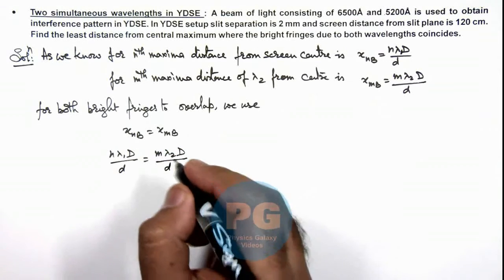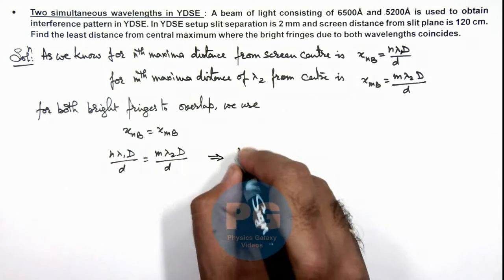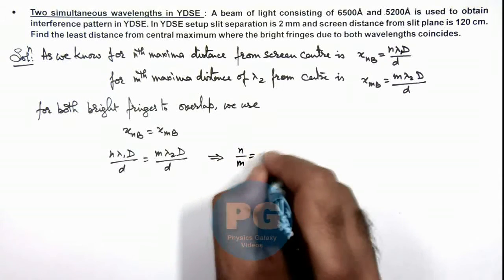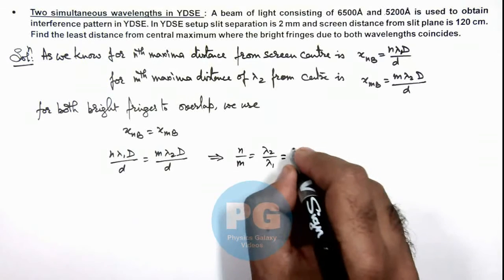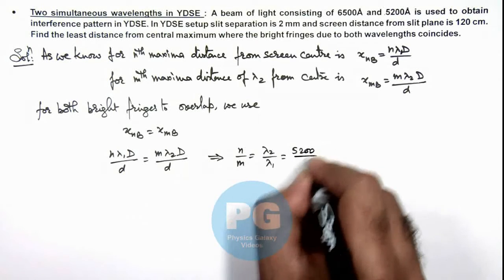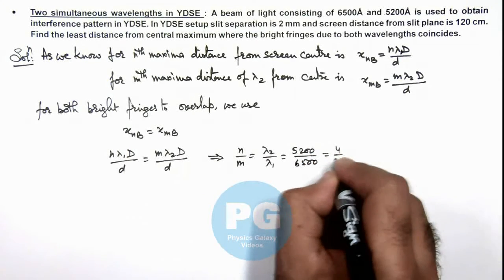Where simplifying we are getting n by m is equal to lambda 2 by lambda 1, which is 5200 by 6500, that is 4 by 5.